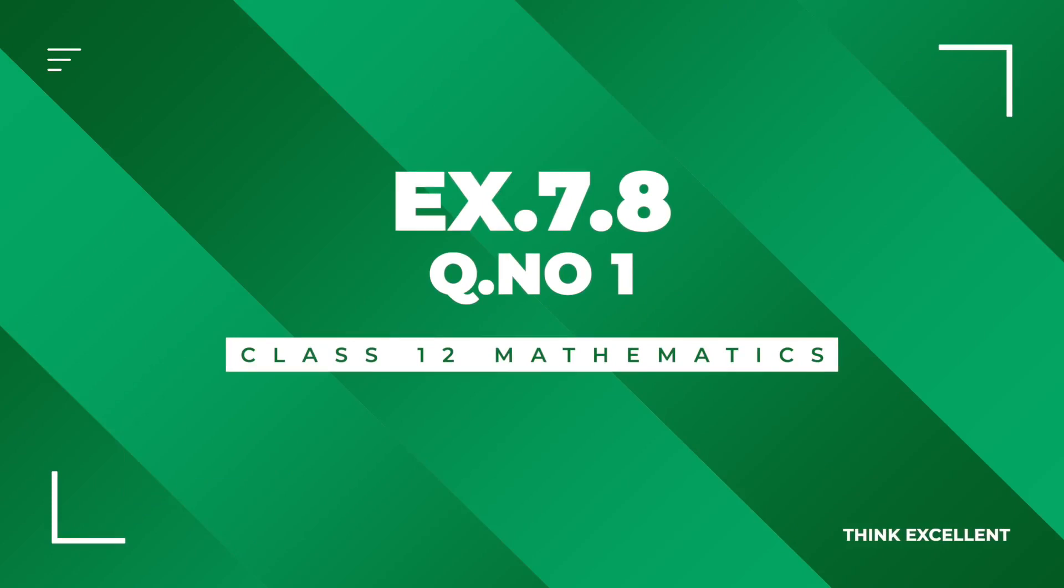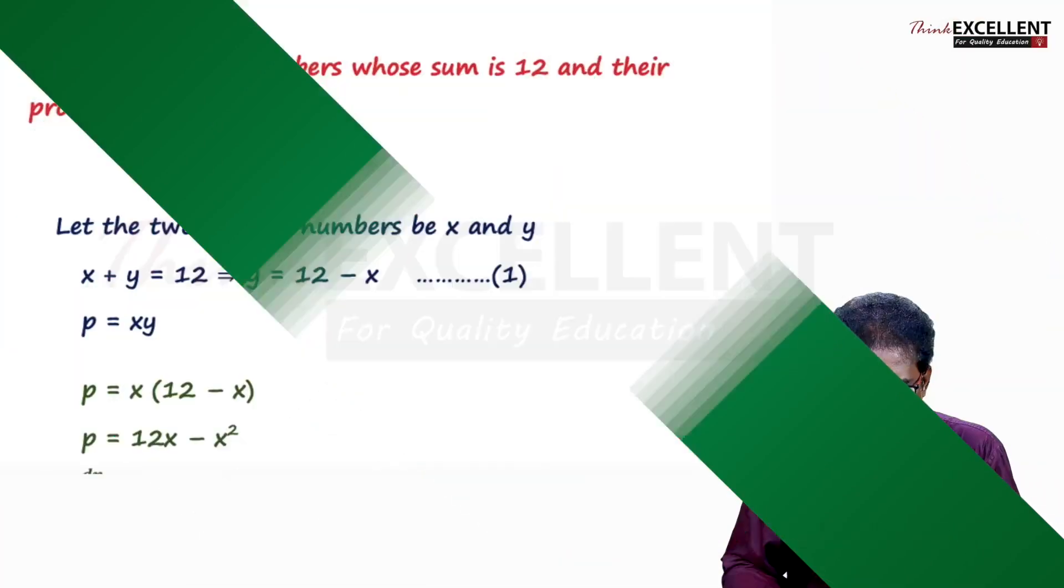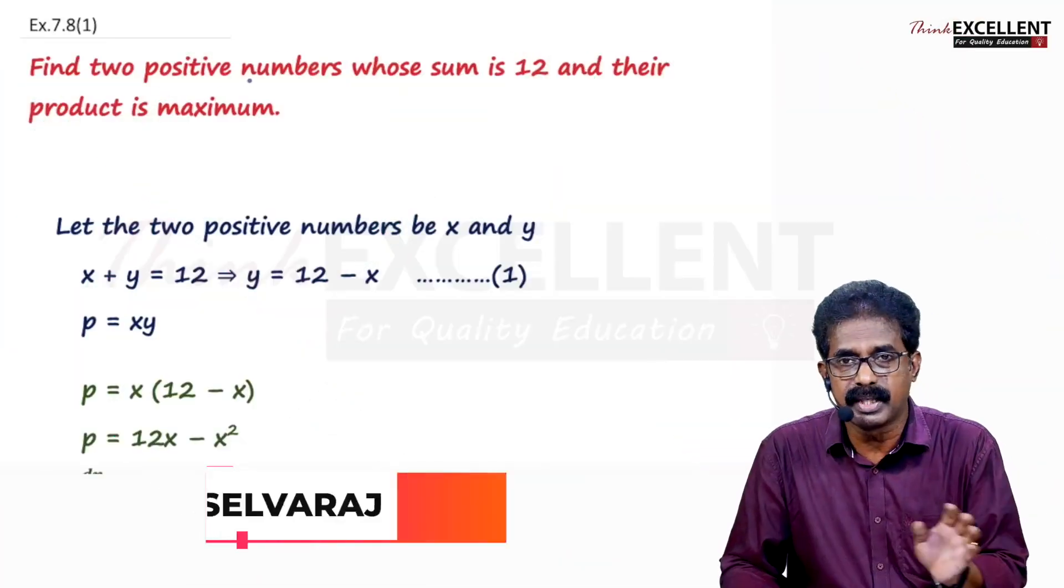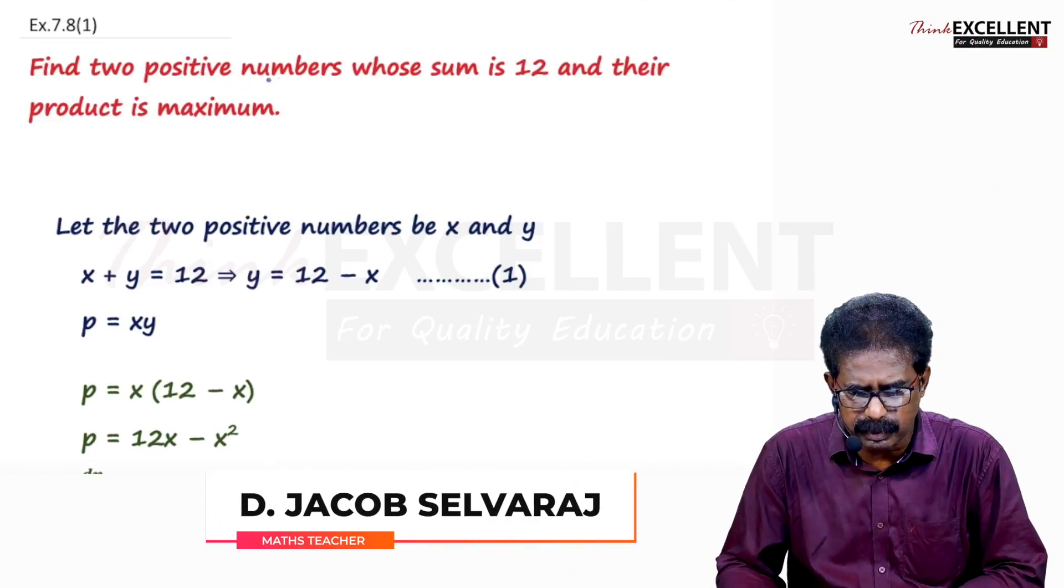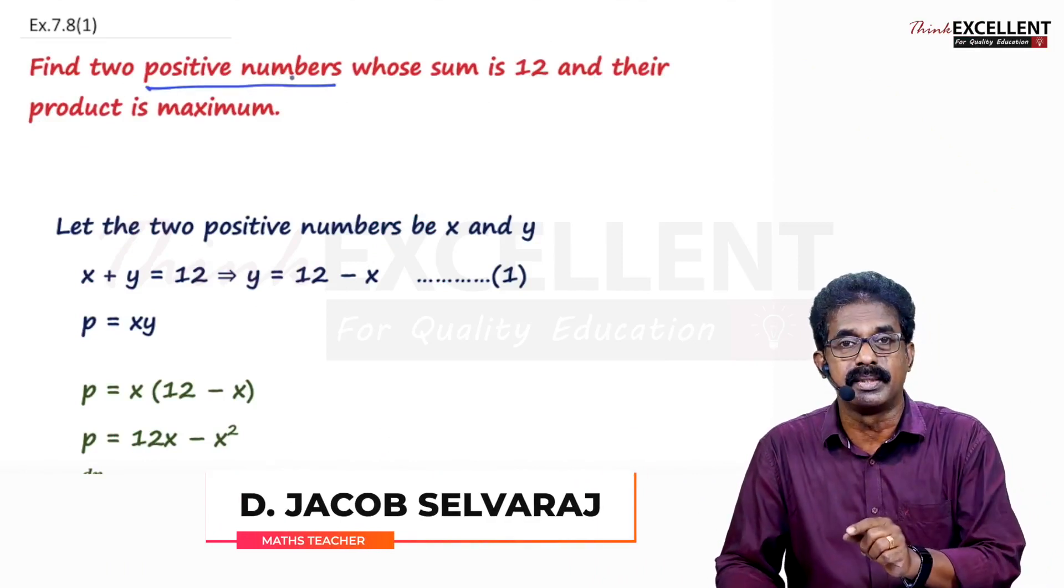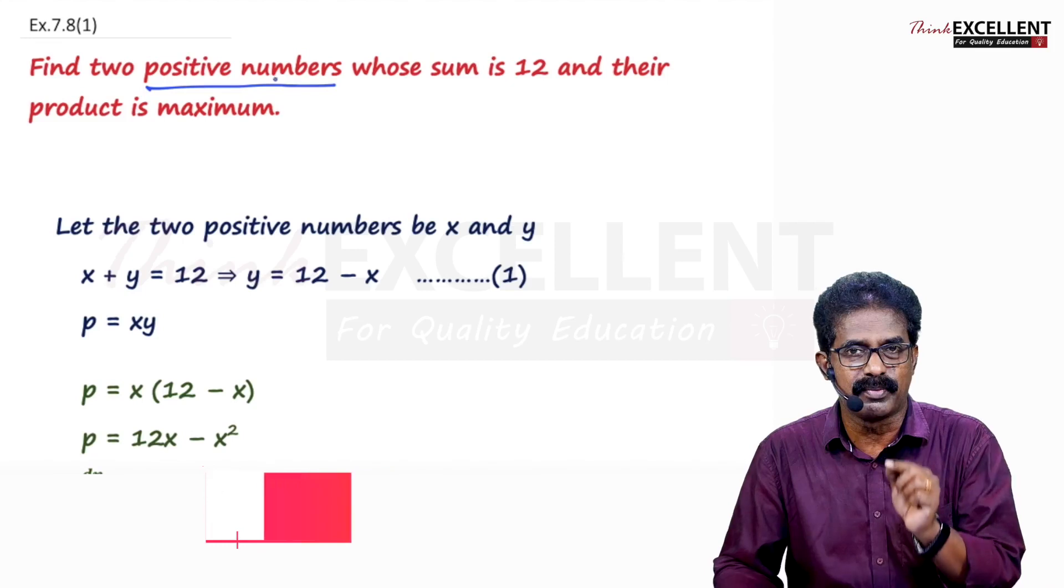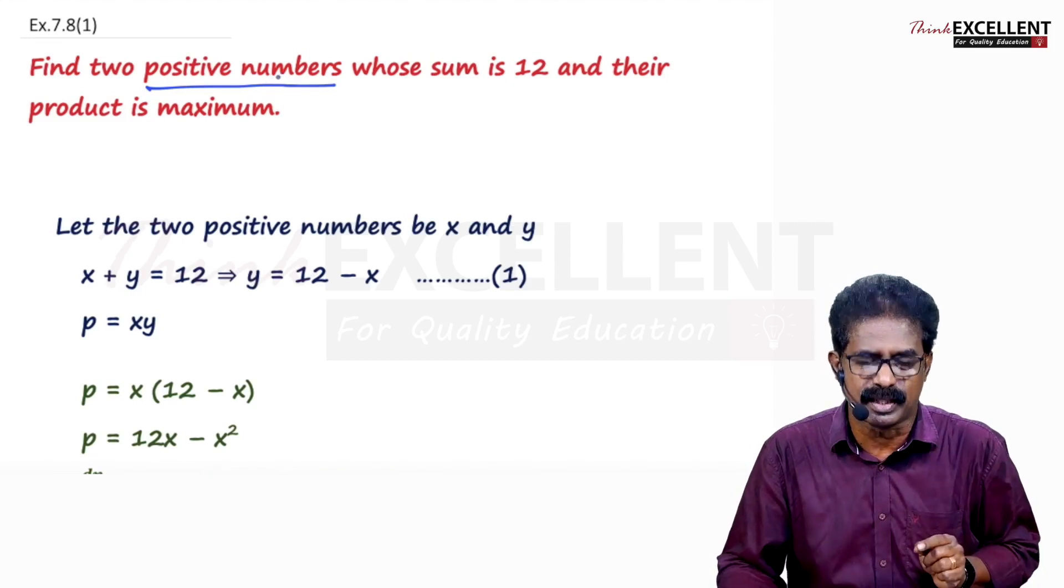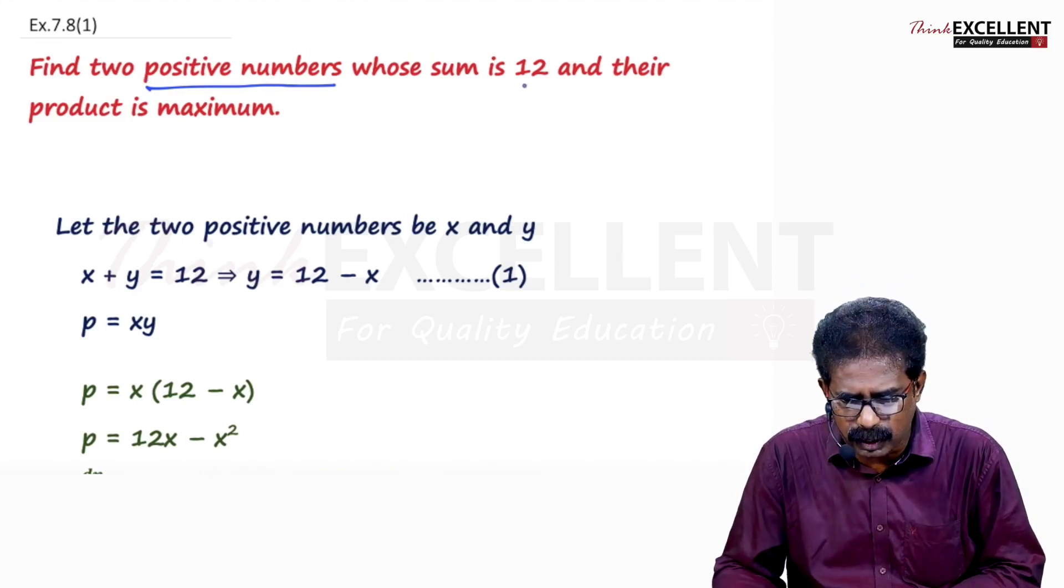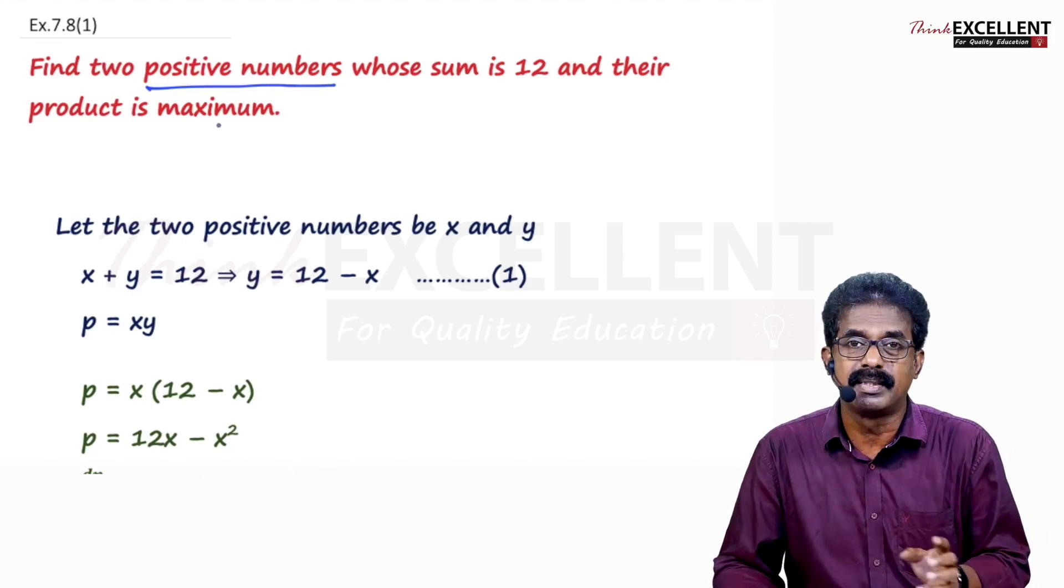Exercise 7.8, Question Number 1. Find 2 positive numbers. Listen very carefully. Underline positive numbers. So even if you get more than one number, if it is negative, leave it. No need to check that. Find 2 positive numbers whose sum is 12 and their product is maximum.